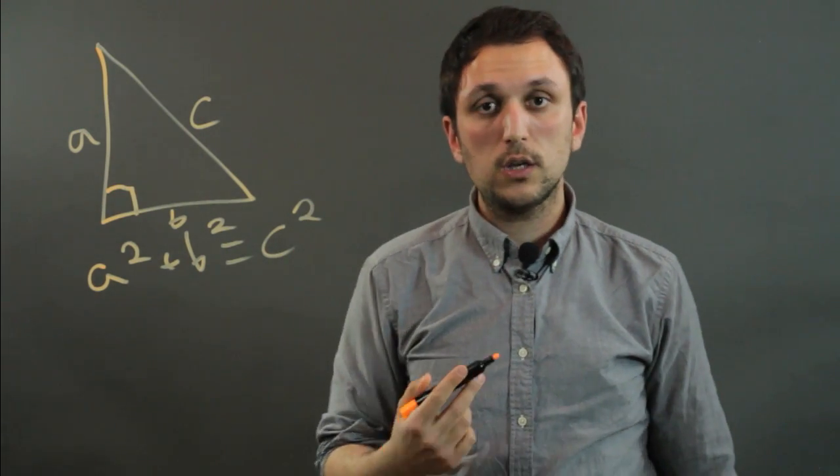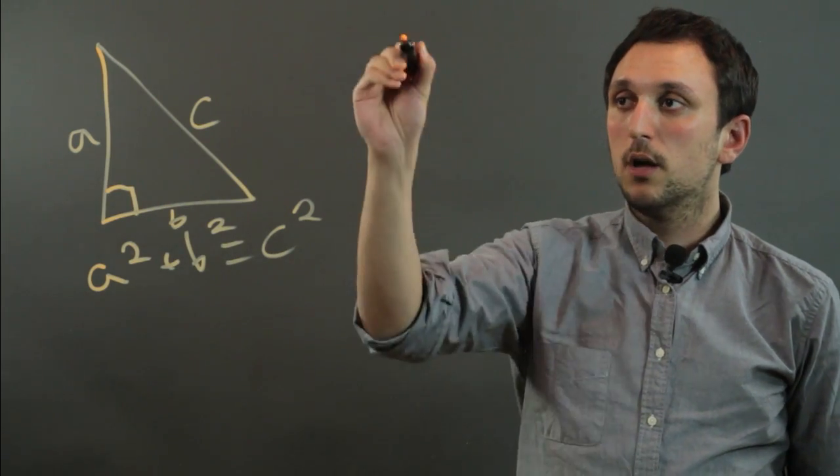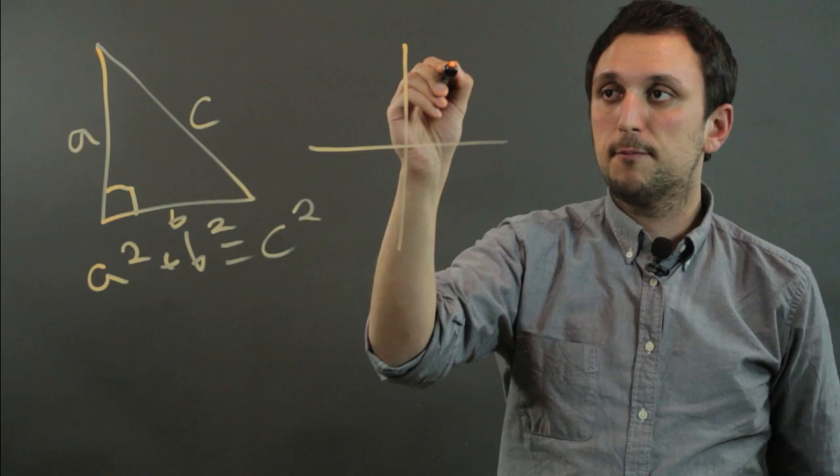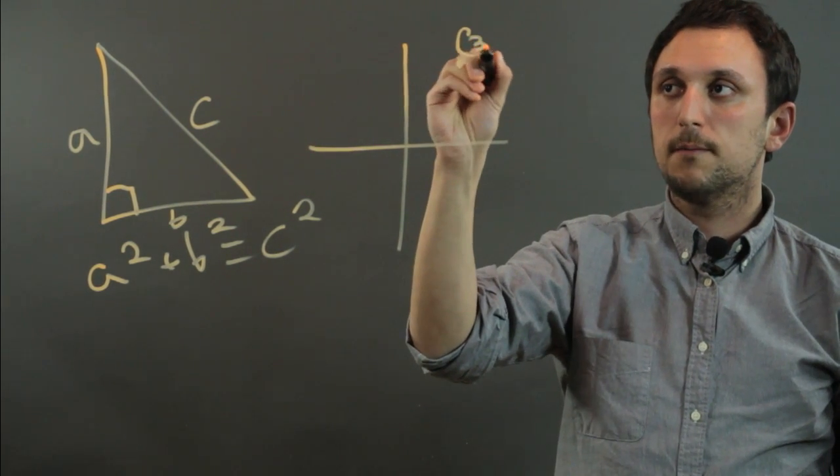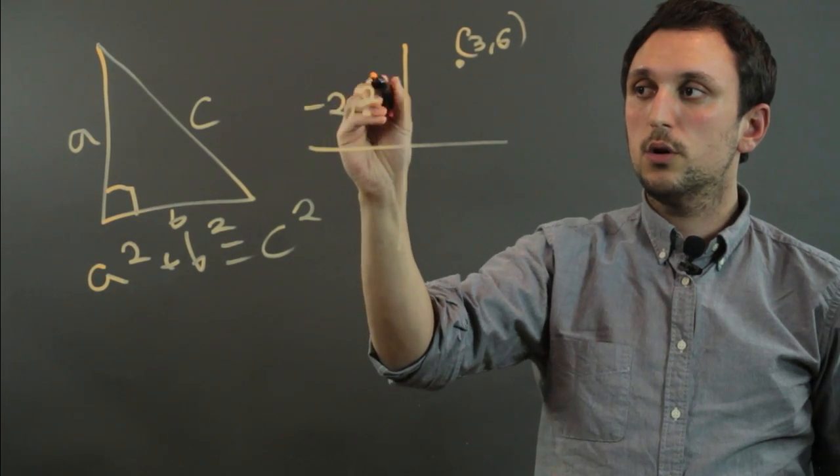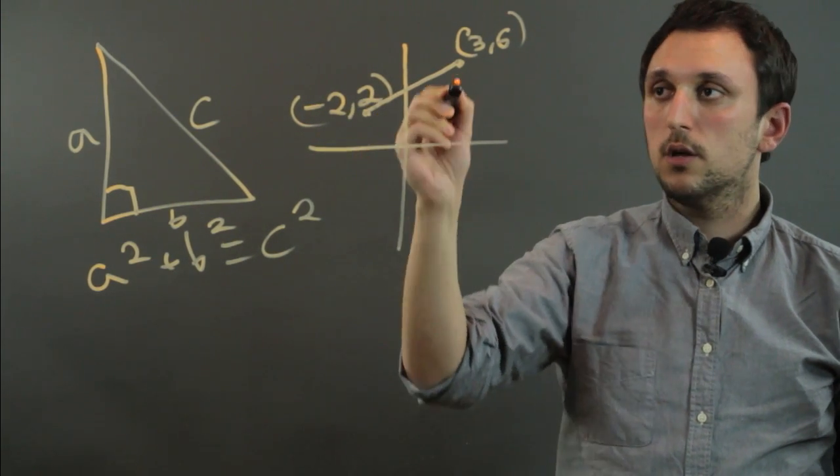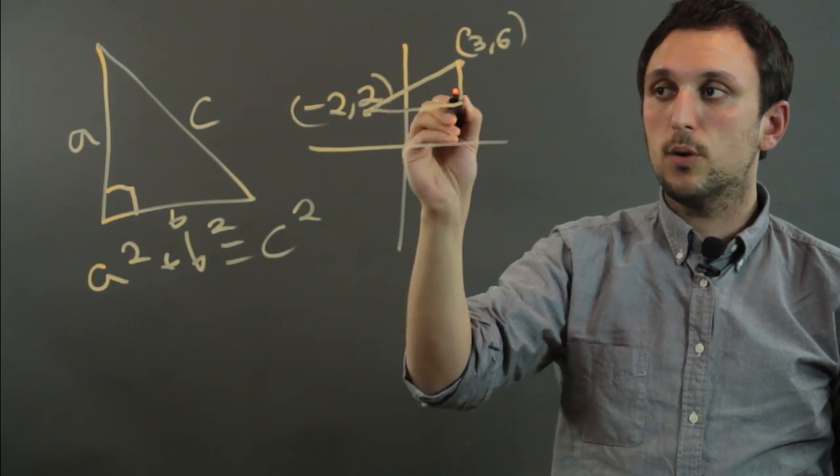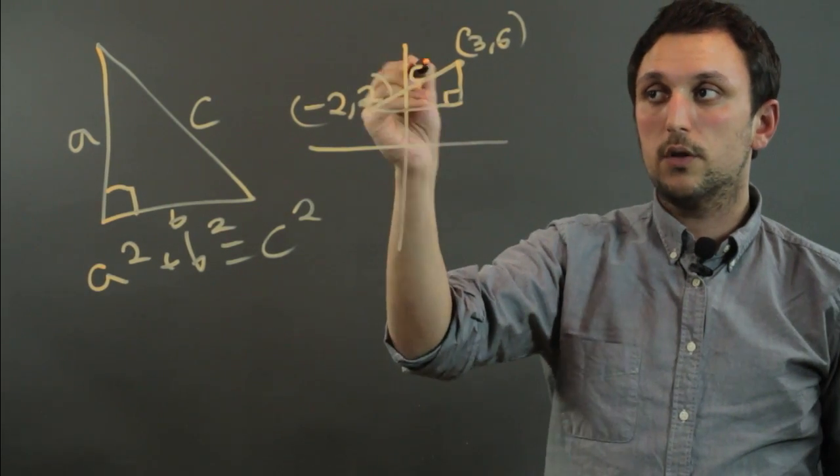Now, this is especially useful when you're trying to find the distance between two objects. On a graph, if we have point (3,6) up here and point (-2,2) over here, then the distance between these two points is the hypotenuse of a right triangle. And we call this C.